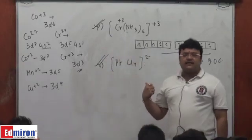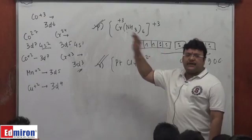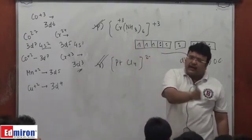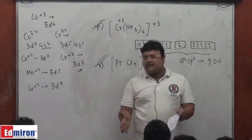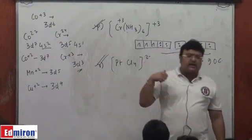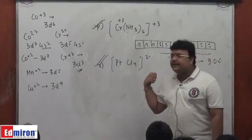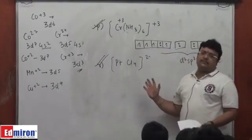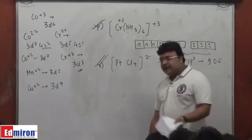In copper with 3d9 and in chromium with 3d3, you find ammonia taking up the inner orbital complex form — ammonia acting as a strong field ligand because it is able to have dsp2 and d2sp3 hybridization respectively. Although it is not pairing up the electrons in those cases.